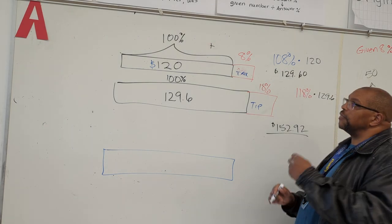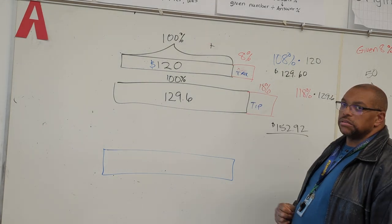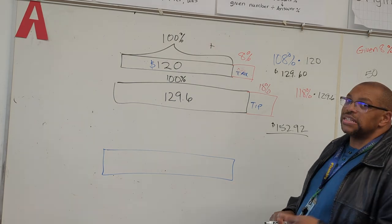That's how you find the first part, the taxes. The next part you want to find is the tip.